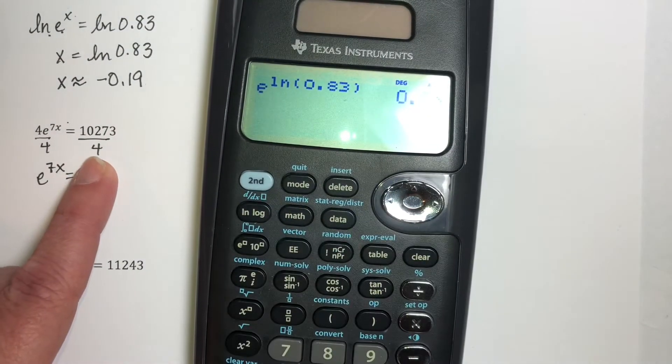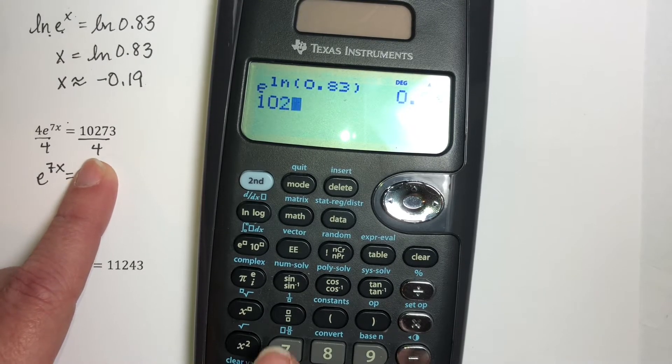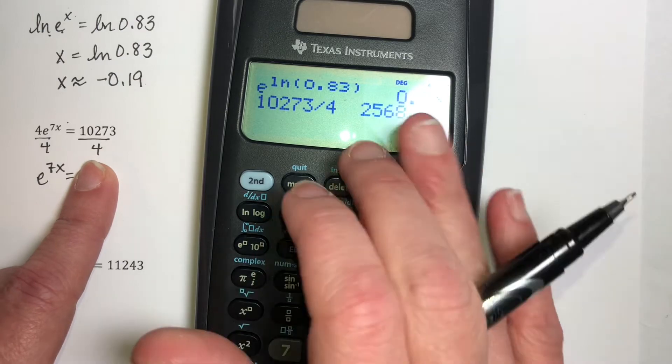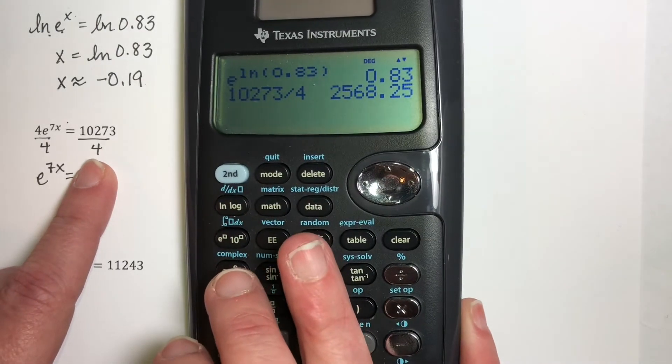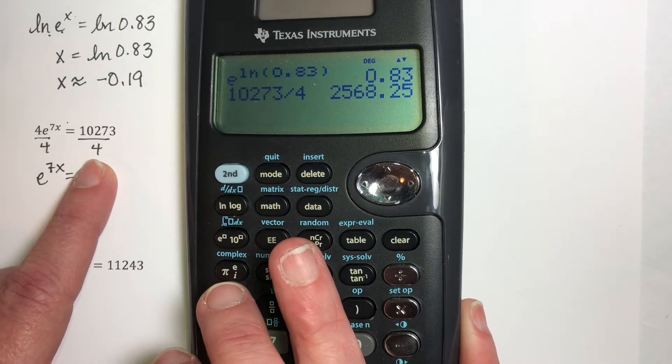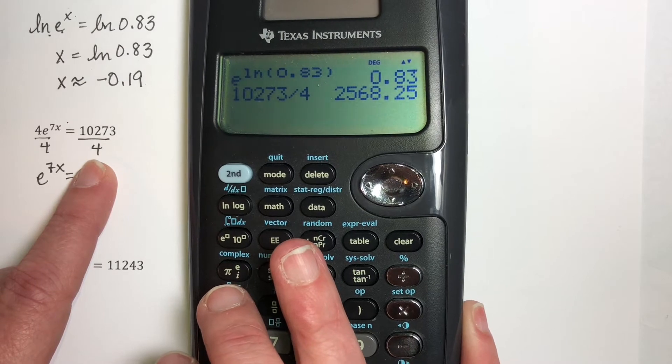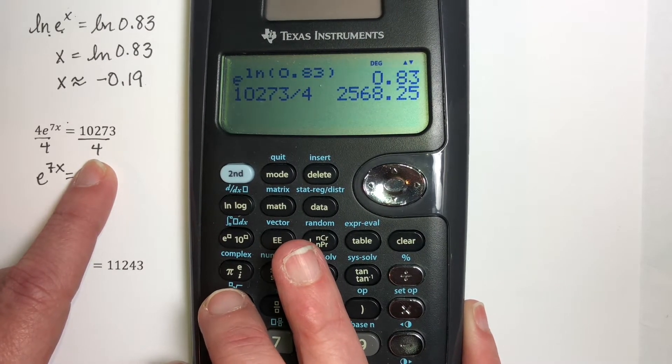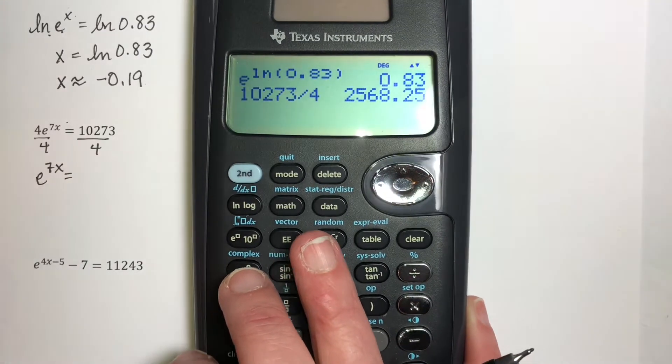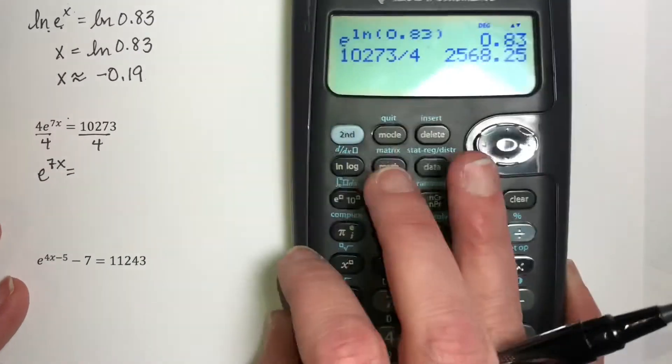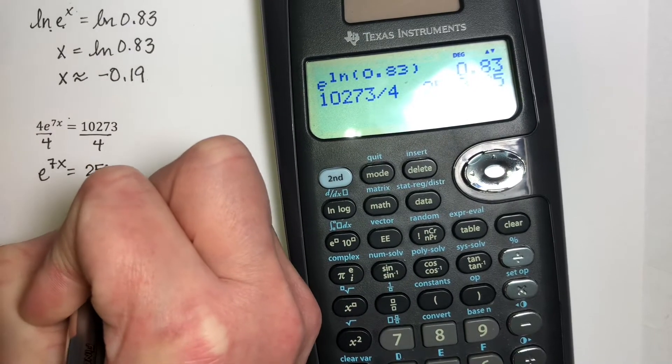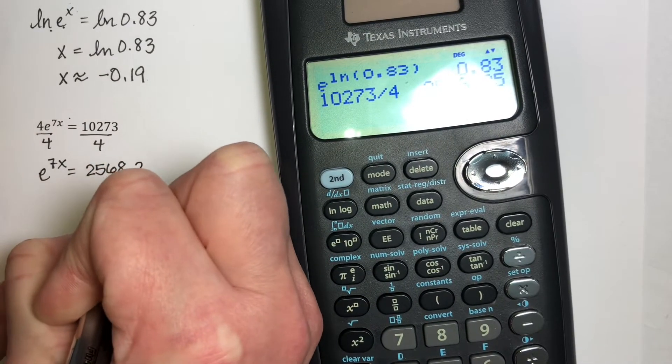So I have e^(7x) equals, this is going to be an exact decimal, so I don't have a problem doing the complete arithmetic and writing this down. If it were not going to be an exact decimal, I would keep it in fraction form. You don't want to use an approximation until the very end. So this is the same thing as 2568.25.